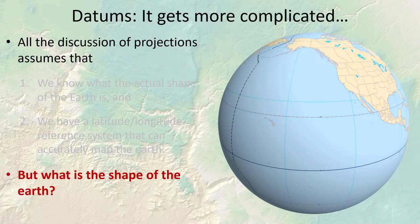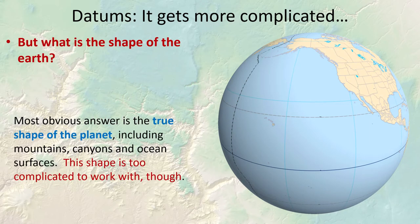This raises a question: what is the actual shape of the earth? We have to have something to project. The most obvious answer would be the actual true shape of the planet, which is measurable and includes mountains, canyons, and ocean surfaces. The problem is that this object is just too complicated to work with.